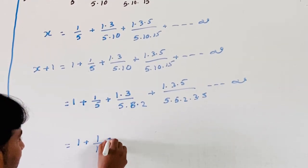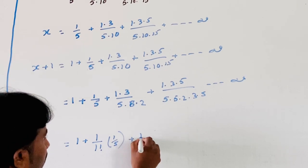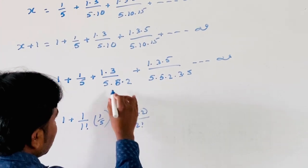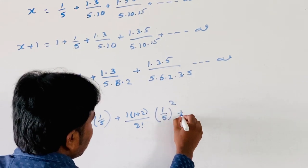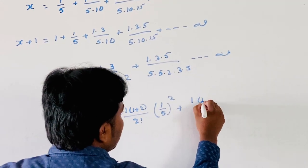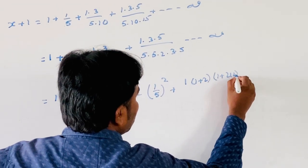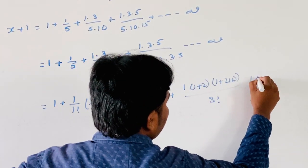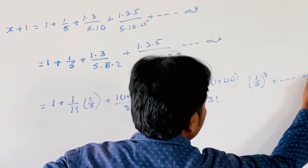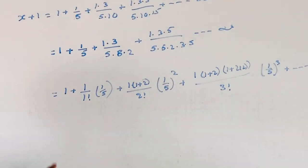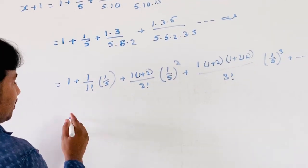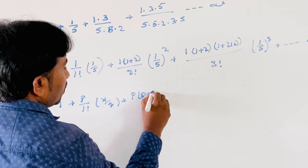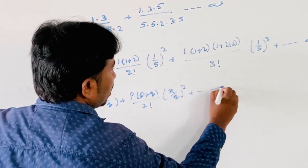So x + 1 = 1 + 1/(1!·5) + (1·3)/(2!·5²) + (1·3·5)/(3!·5³) and so on to infinity, where we represent 3 as (1+2), matching the binomial series pattern 1 + p/(1!)·(x/q) + p(p+q)/(2!)·(x/q)² + ... to infinity.